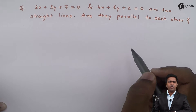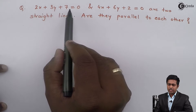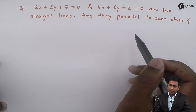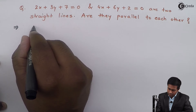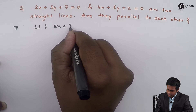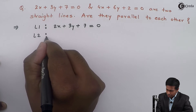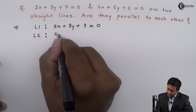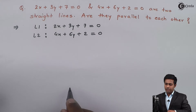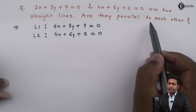Before starting with the solution, we will observe the given data. Here, the first line I will assume as L1 and the second line as L2. So, L1 is 2x plus 3y plus 7 equals to 0, and L2 is 4x plus 6y plus 2 equal to 0. The question is: are these lines parallel to each other?